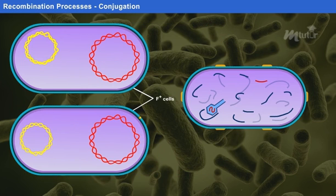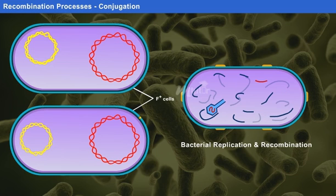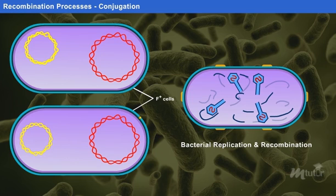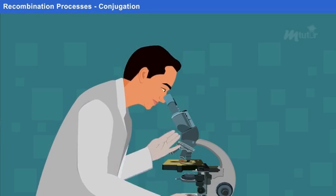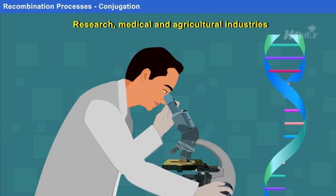Thus, by learning the processes of bacterial replication and recombination, we can understand the various aspects of genetic engineering, which finds its application in research, medical and agricultural industries.